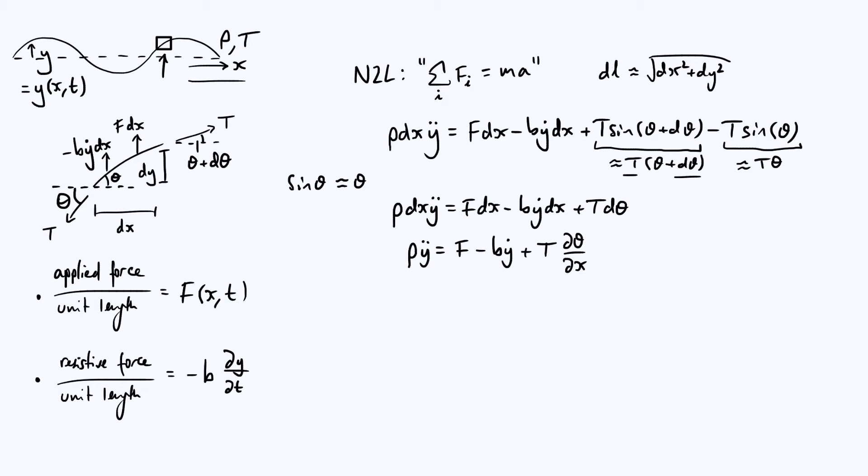This is almost what we want because it is a differential equation. It's a partial differential equation. The only inconvenient thing at the moment is the presence of this theta. We want to know how y changes with x and t, but we've got this additional variable theta. Fortunately, we can use the small angle approximation again to eliminate that theta.